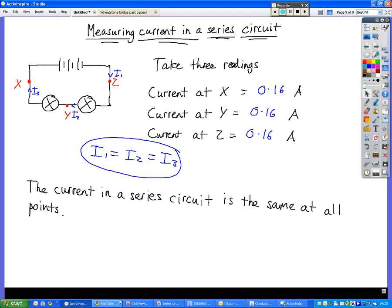So voltage: split up across the components, add them together to get the voltage across the battery. Current: same at all points in a series circuit.